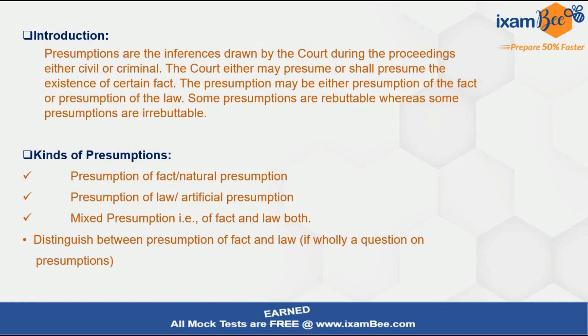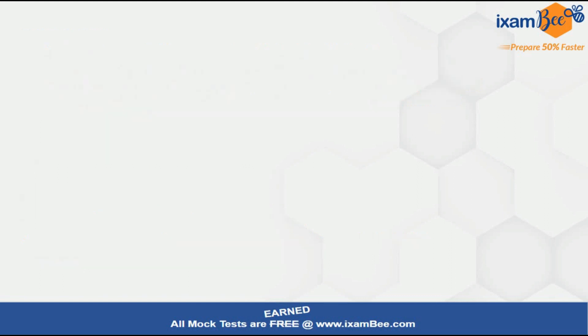If your question is only restricted to 'what are presumptions' with no specific mention of presumptions as to documents, you get more scope to elaborate and can give more space to distinguishing 'may presume' and 'shall presume' — very important terms. You have to define these by giving a reference to Section 4, and then address conclusive proof. Conclusive proof arises out of a legal presumption that exists in particular circumstances and is the strongest of all presumptions.